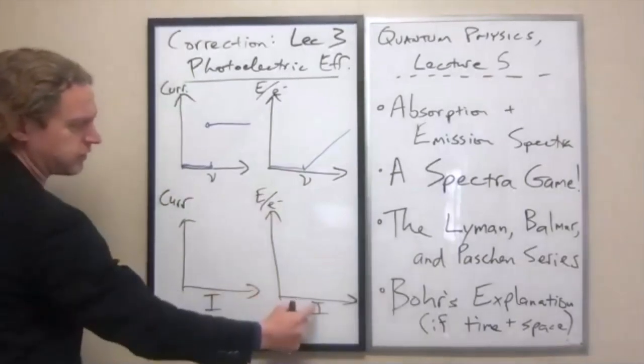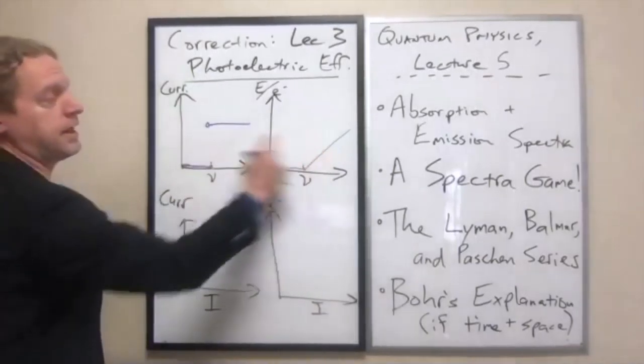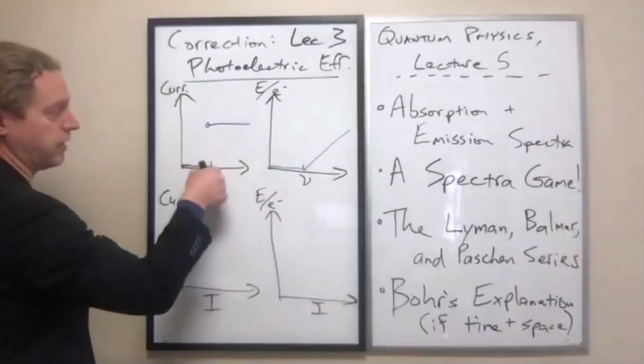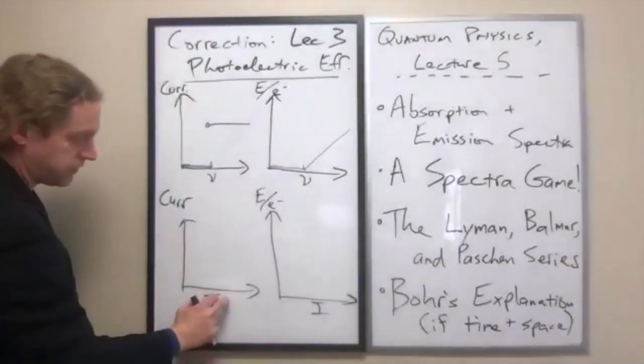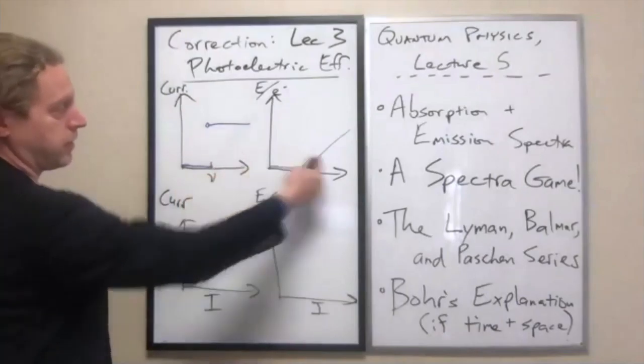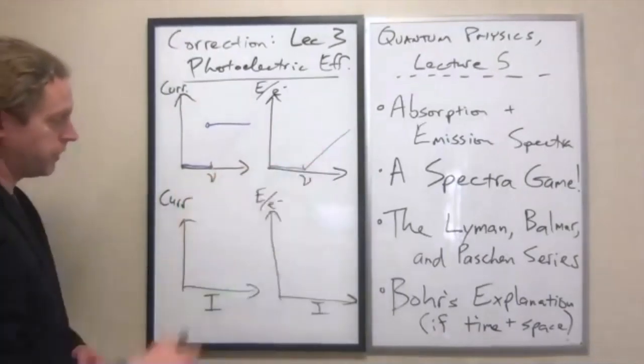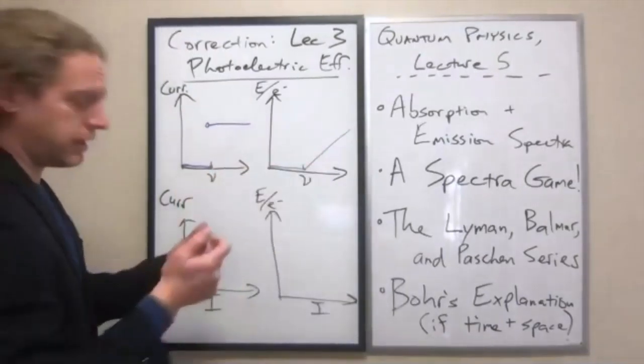So this is, we held, for this case here, we held the intensity constant and we changed the frequency, and it's the opposite here. We hold the frequency constant above that critical frequency, and we measure the output if we change the intensity of the light.